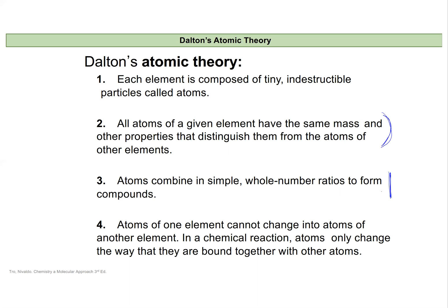Atoms will be able to combine in whole number ratios to form compounds — again stating that you can't split an atom in half. Atoms of one element cannot change into atoms of another element. In a chemical reaction, atoms can change the way they're bonded to each other and create a new compound, but you won't change the atom itself. The one exception we'll talk about soon is nuclear chemistry, where unstable nuclei or unstable atoms decay into other types of atoms.